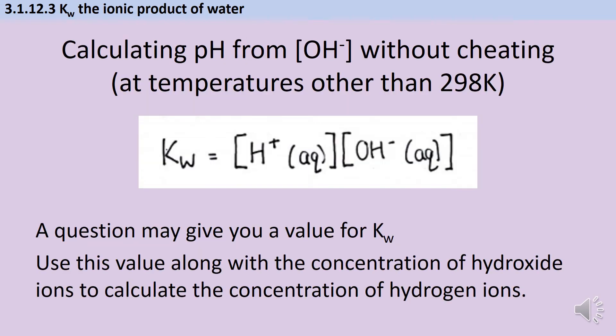In the previous video about the pH scale, we looked at a cheats method of working out what the pH of an alkali was, using the idea that at 298 Kelvin, pH and POH sum together to make 14.